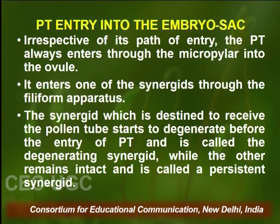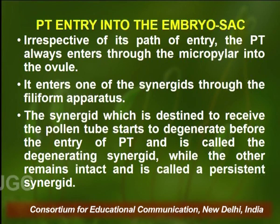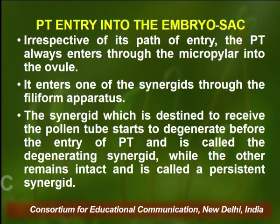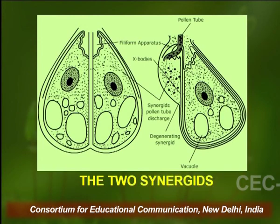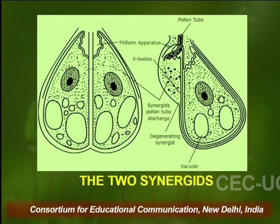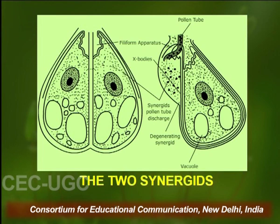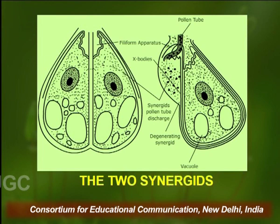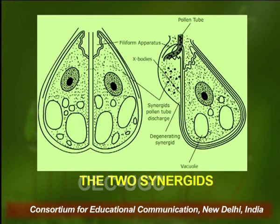The pollen tube enters one of the synergids through the filiform apparatus. The synergid destined to receive the pollen tube starts degeneration much before the entry of the pollen tube — this is called the degenerating synergid — while the other synergid, into which the pollen tube does not enter, remains intact and is called the persistent synergid. The picture shows both synergids intact on the left, and on the right one synergid is shrivelled and disintegrating while the other remains turgid.